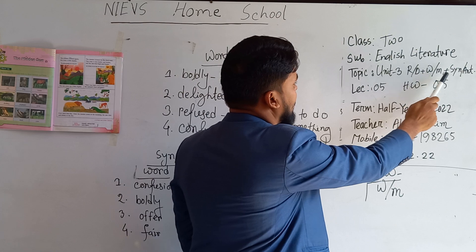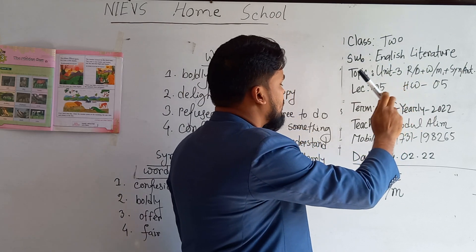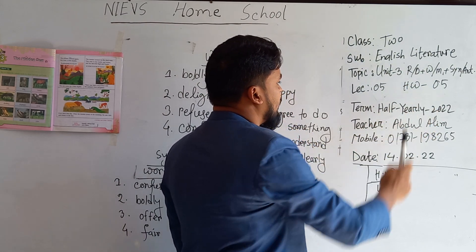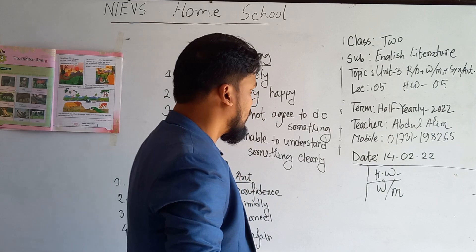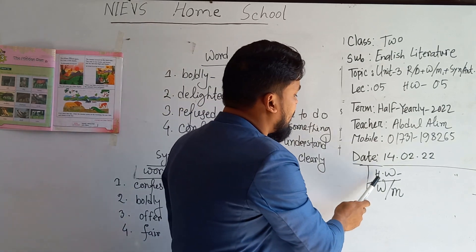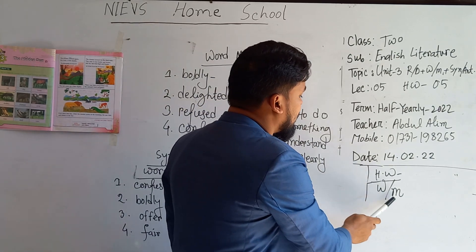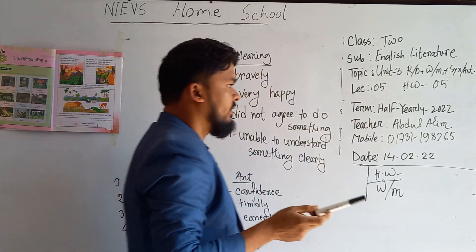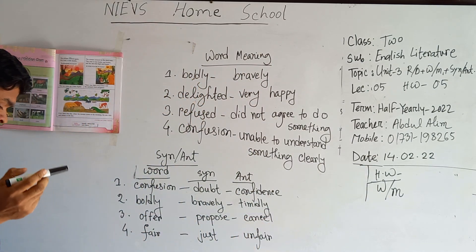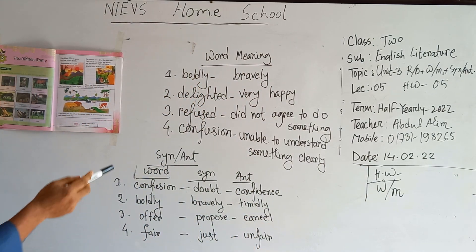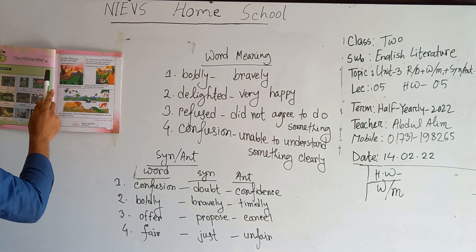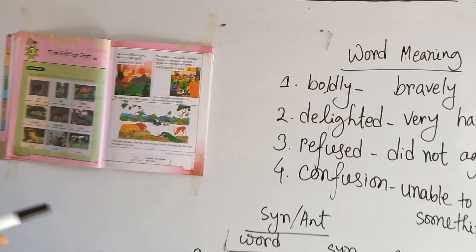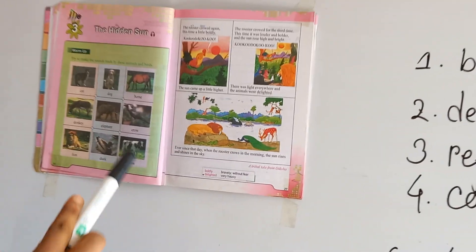Dear students, today's topic is Unit 3, Reading — Odd Meaning and Synonym. This is lecture number 5. Today's SW is the odd meaning of Unit 3. Now, dear students, come to the text. You are requested to open your text.